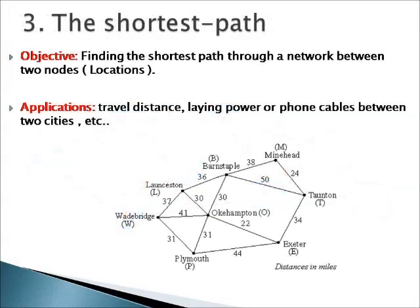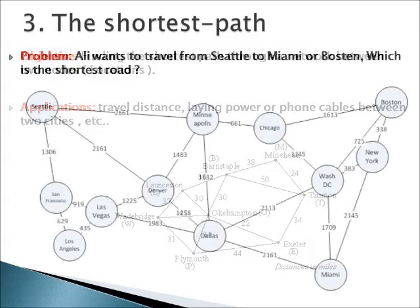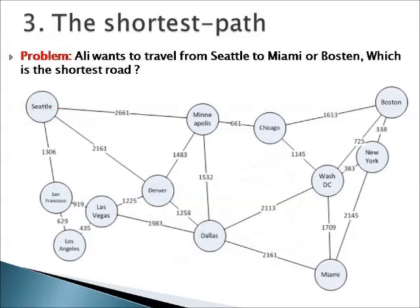The third network model is called the Shortest Path. From its name, we need to find the shortest path between two locations or nodes. Applications include laying power or phone cables between two cities, where we need to find the best minimum distance using this method. Let's solve this problem together.